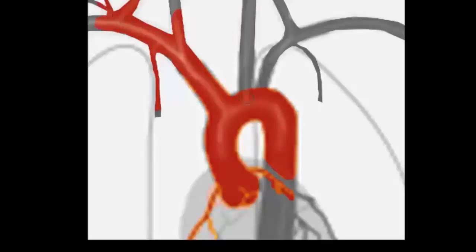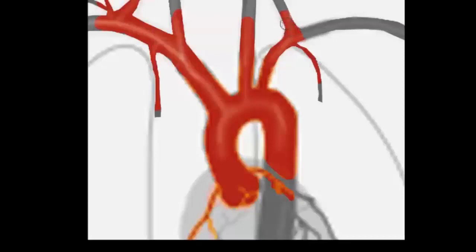On the left side, the common carotid comes off separately from the arch of the aorta, and then the left subclavian comes off, and that in the same way gives off the internal thoracic branch, then the vertebral branch, and then the thyrocervical trunk, going on to the brachial artery.